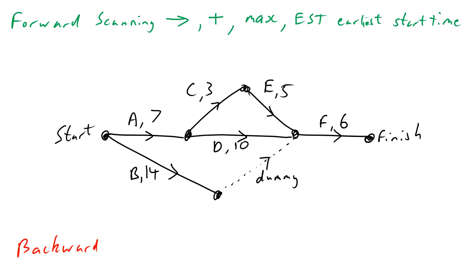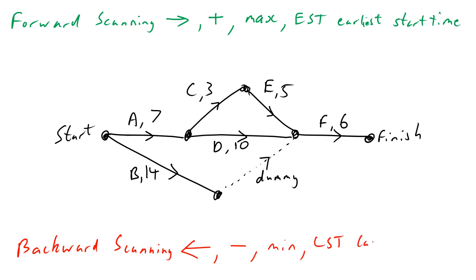Backward scanning: we go backwards against the arrows, we subtract, we take the minimum, and we get the LST — the Latest Start Time.